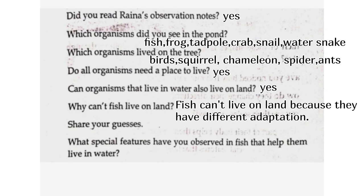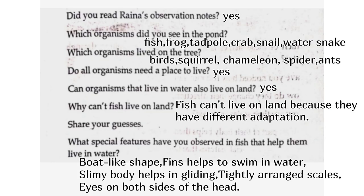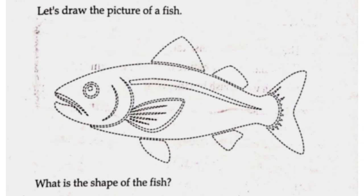What special features have you observed in fish that help them live in water? Boat-like shape. Fins help to swim in water. Slimy body helps in gliding. Tightly arranged scales. Gills on both sides of the head. Let's draw the picture of a fish — you can join the dots and draw the picture of the fish.